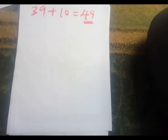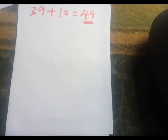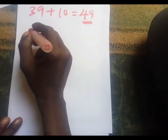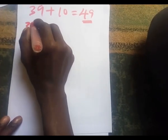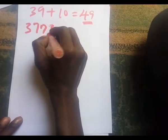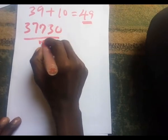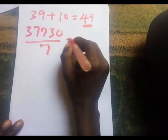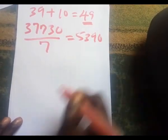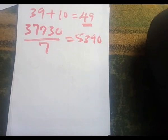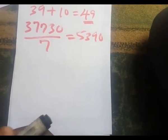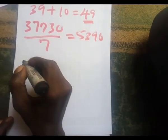We know that seven times seven equals 49, so 49 is divisible by seven. Therefore, 37,730 is also divisible by seven, and the result is 5,390.